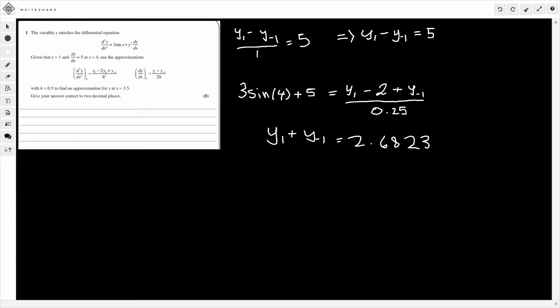Notice now we have two simultaneous equations. We have this equation up here, y1 minus y minus 1 is equal to 5. We've got y1 plus y minus 1 is equal to 2.6823. So what I'm going to do now, is because the y1s are both positive, if you remember all the way from GCSE, if they're different you add them, if they're the same you subtract. So I'm going to subtract these two equations.